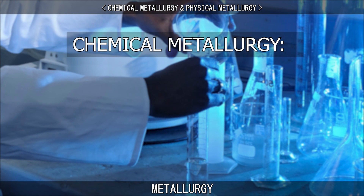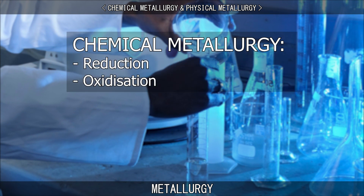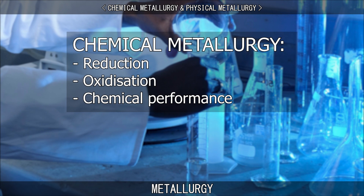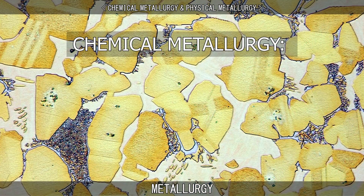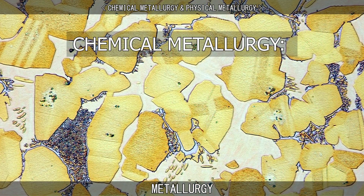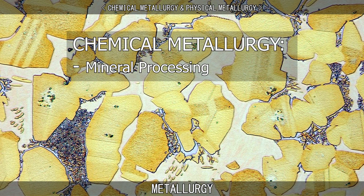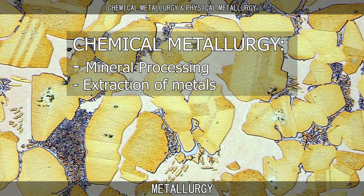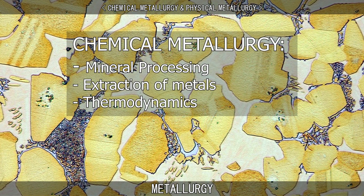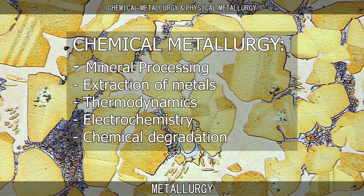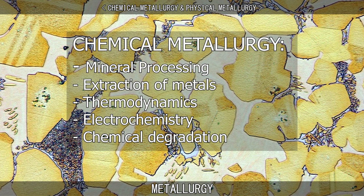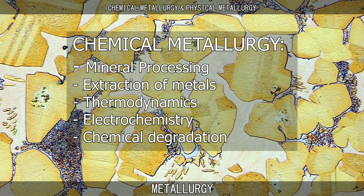Chemical metallurgy is chiefly concerned with the reduction, oxidisation, and the chemical performance of metals. Subjects of study in chemical metallurgy include mineral processing, the extraction of metals, thermodynamics, electrochemistry, and chemical degradation, also known as corrosion.